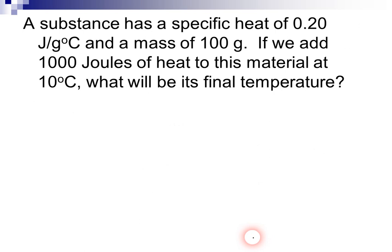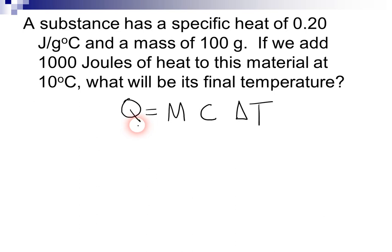Let's try one more example — this might be a little bit more advanced. We have a substance with a specific heat capacity of 0.20 joules per gram degree Celsius and a mass of 100 grams. If we add 1,000 joules of heat to this material at 10 degrees Celsius, what will be its final temperature? We're using the equation Q equals MC delta T. Q is the number of joules transferred — it says we're adding 1,000 joules to this, so that's our Q.